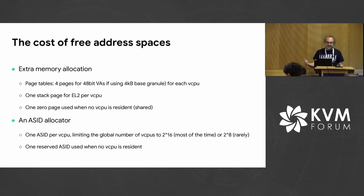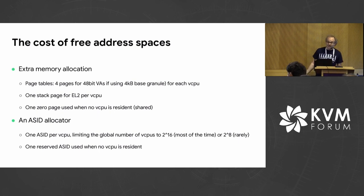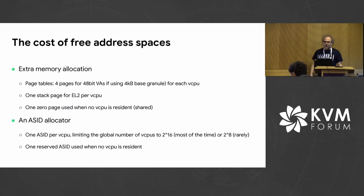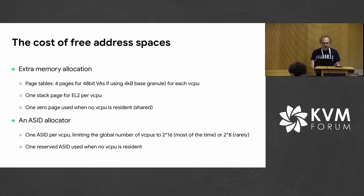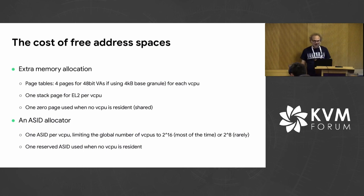Of course, this comes at a cost. It's extra memory allocation — we need four page tables. We need an extra page for the stack at EL2 per vCPU, and we need a zero page for when no vCPU is resident, but we can point all the TTBRs to that one just to make sure we don't fetch any extra TLB entries when no vCPU is resident. We need an ASID allocator, which limits the number of vCPUs — on most hardware it's 2^16, which should be enough — plus a reserved one when no vCPU is resident.